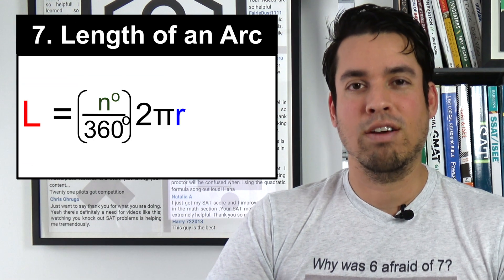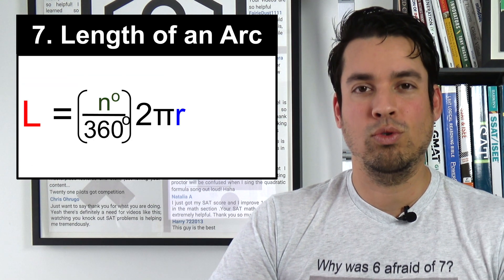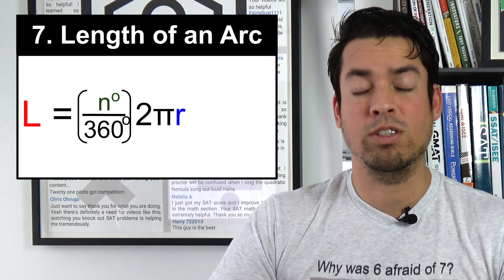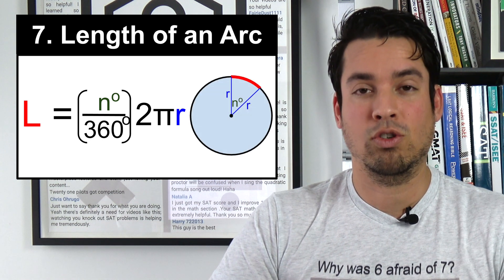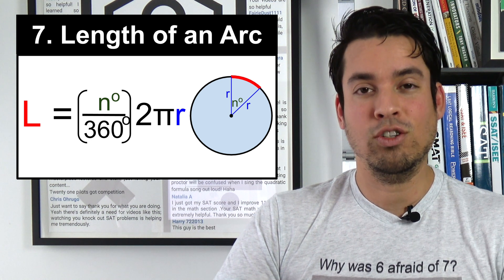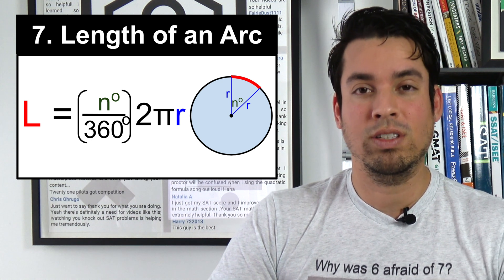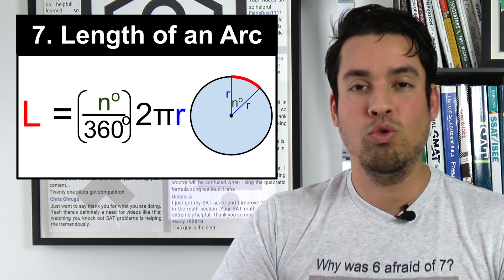Next on the list is length of an arc, which is tied back to the formula for circumference because we're simply taking a piece of the circumference. The formula here is the central angle divided by 360 degrees times 2πr.